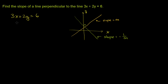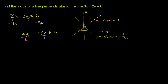Let's get rid of the x on the left-hand side — let's subtract 3x from both sides. The left-hand side, we're left with just 2y. The right-hand side, we have negative 3x plus 6. Now we can divide both sides by 2, dividing all the terms on the right-hand side by 2, and we get y is equal to negative 3 halves x plus 3.